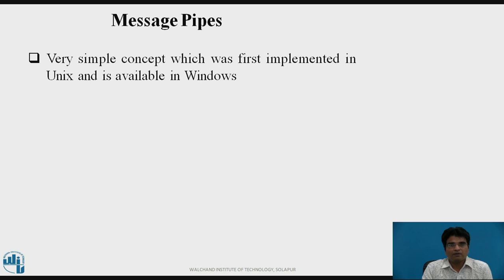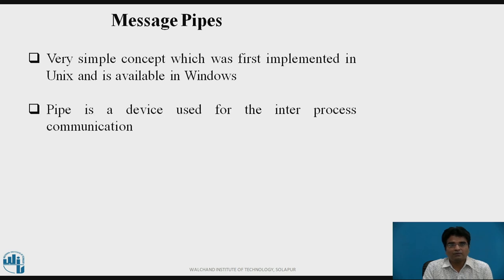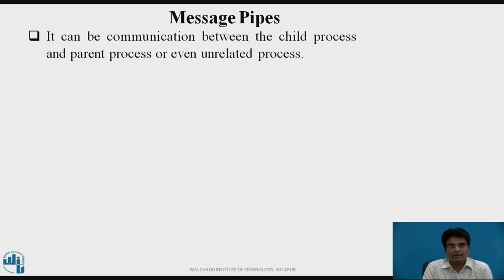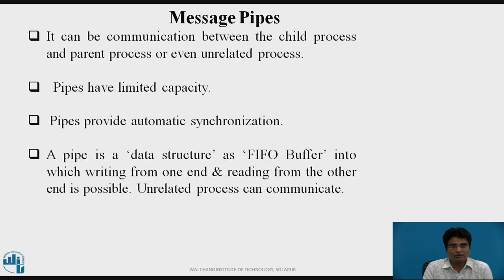Message Pipes: A very simple concept which was first implemented in Unix and is available in Windows as well. A pipe is a device used for inter-process communication and follows a client-server architecture. As shown in the diagram, Process 1 writes through the pipe while Process 2 reads from the pipe. Communication can be between a child process and a parent process or even unrelated processes. Pipes have limited capacity, provide automatic synchronization, and are a FIFO data structure with writing from one end and reading from the other.